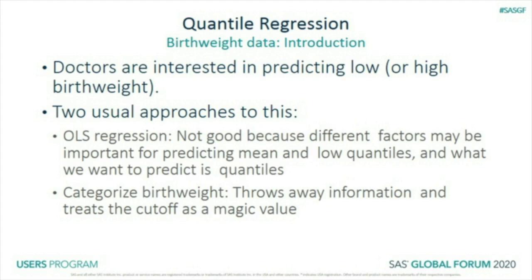What is often done is to categorize birth weight into low and normal, sometimes at a cutoff of 2,500 grams. I tell doctors that treating a baby who's 2,499 grams as very different from one who's 2,101 grams, yet identical to one who's 1,500 or 1,000 grams, doesn't make medical sense. And they agree — but then say 'do it with logistic regression, because that's how we always do it.'